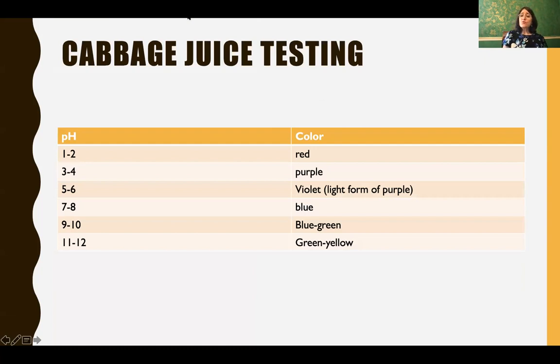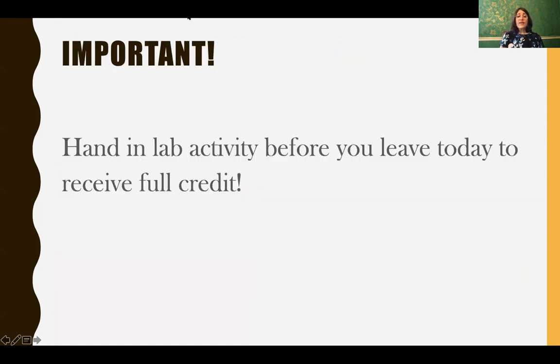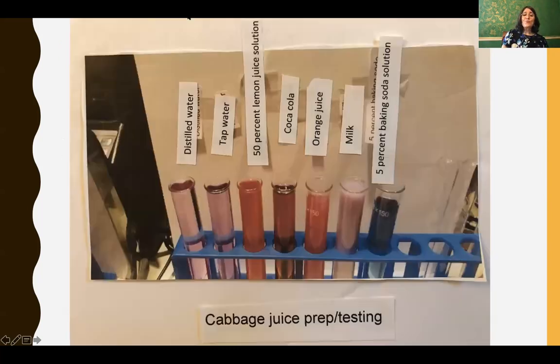So here's the cabbage juice scale. And you do have that on your handout when you do the lab. So you will be able to see the color and then match it to find the pH range that your solution is in. And make sure you hand in the lab activity before you leave today. And also, I know we're using common household items, but please make sure we are following the laboratory safety practices. So we are going to wear our goggles and we are going to still practice our regular lab safety always. So just wanted to make that clear.